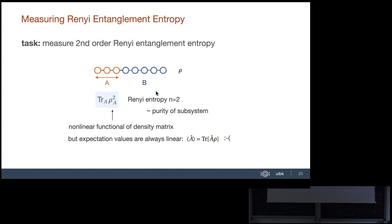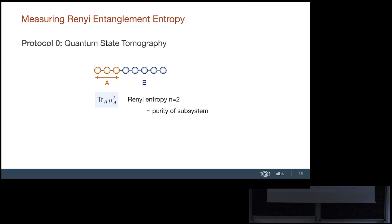A zeroth-order approach would be quantum state tomography, but that is exponentially expensive — your PhD might never end. It scales exponentially with the subsystem size, and we're looking at subsystems of up to 20-51 particles. But there's a way out: suppose you know something about your quantum state — something you can test in the experiment. In many-body problems with k-local interactions, we can exploit that structure.